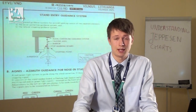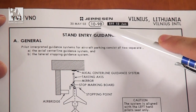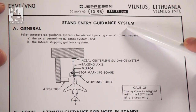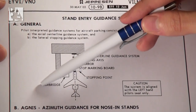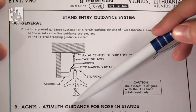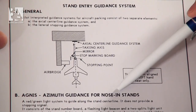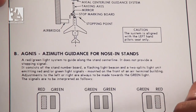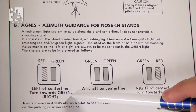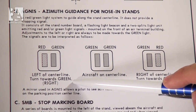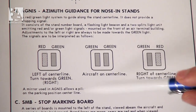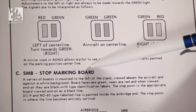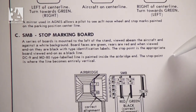The next chart is 10-9 Bravo, published 2003 May 30th, which is about the stand entry guidance system. First we have some general information about how it looks and what it consists of. Below that we have the information about azimuth guidance for nose-in stands: if you have a right green light and left red light you need to turn towards the green light to the right; if you have both green lights the aircraft is on the centerline; and if the green light is on the left and red is on the right you turn left towards the green. There is also a stop marking board which tells you where to stop the aircraft when parking.